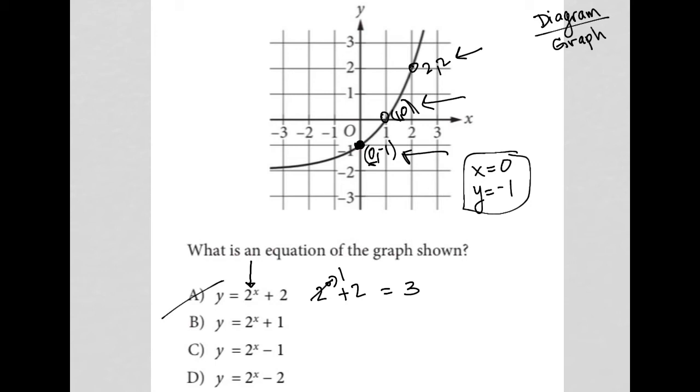For choice B, I'd have 2 to the 0 plus 1. So again, 2 to the 0 is 1. 1 plus 1 equals 2. I want -1, so that's gone.